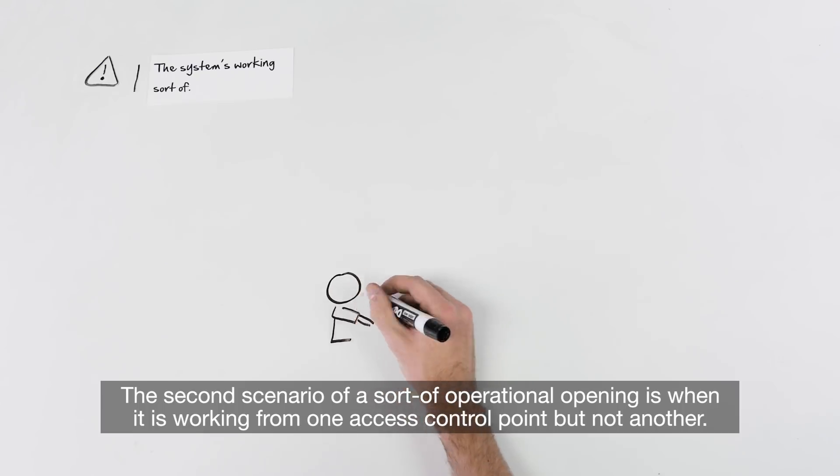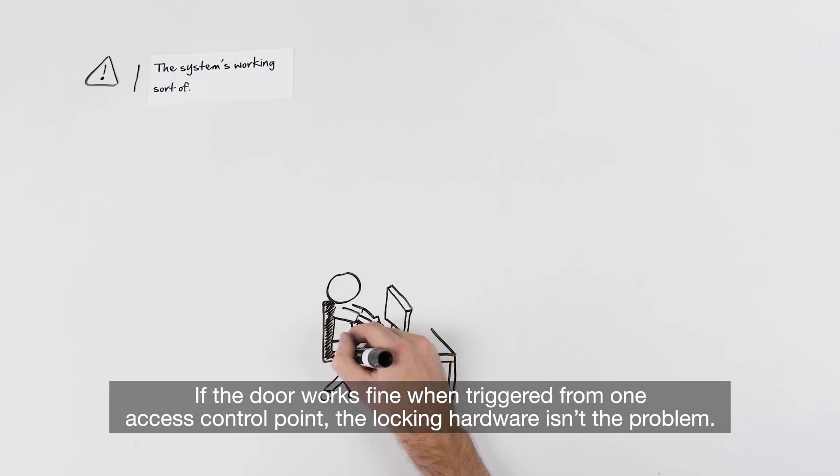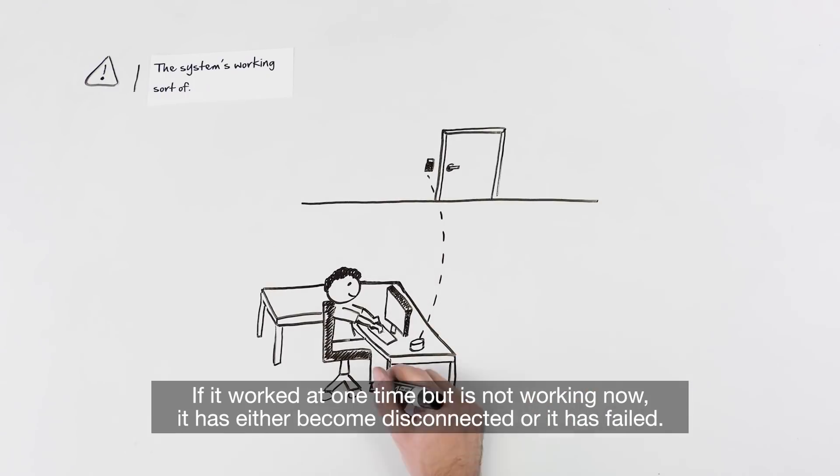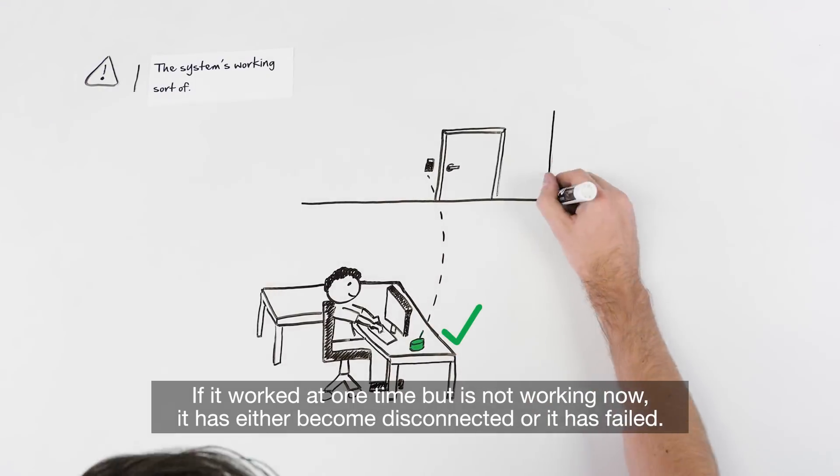The second scenario of a sort of operational opening is when it is working from one access control point but not another. If the door works fine when triggered from one access control point, the locking hardware isn't the problem. The most likely source is the switch at the malfunctioning access control point. If it worked at one time but is not working now, it has either become disconnected or it has failed.